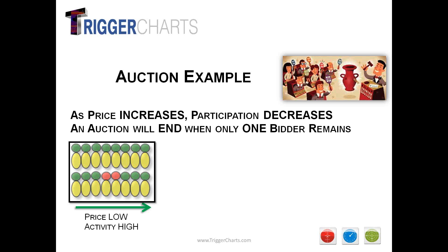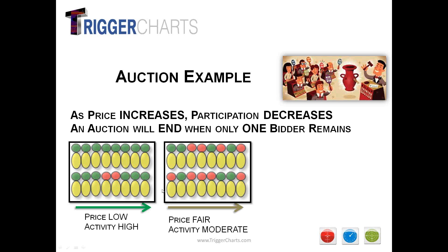In a general auction, an item is presented — a vase, a piece of art, a car. The auction bidder starts at a typically low level, and as the price is low, people are excited: 'I have to have that vase.' So the price rises as the bids increase. As price is low, activity is high — think of this in the market as volume. But as the price actually rises, they have to pull the price higher to shut off the bidders. So activity is moderate, and price is at fair value.